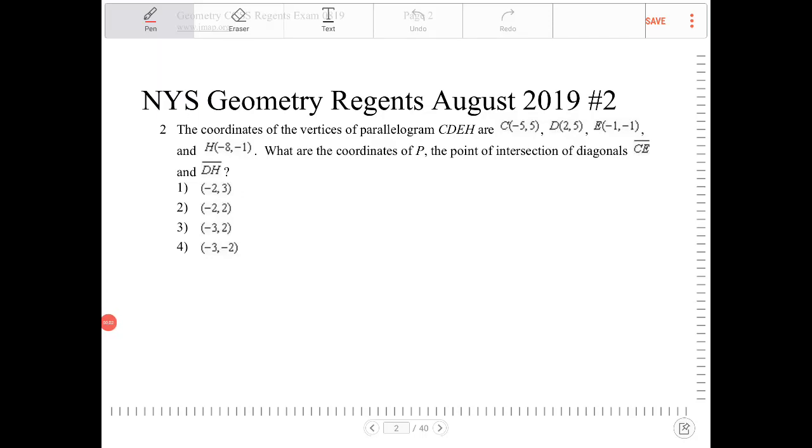The coordinates of the vertices of a parallelogram CDEH are given by those coordinates. What are the coordinates of P, the point of intersection of diagonals CE and DH?